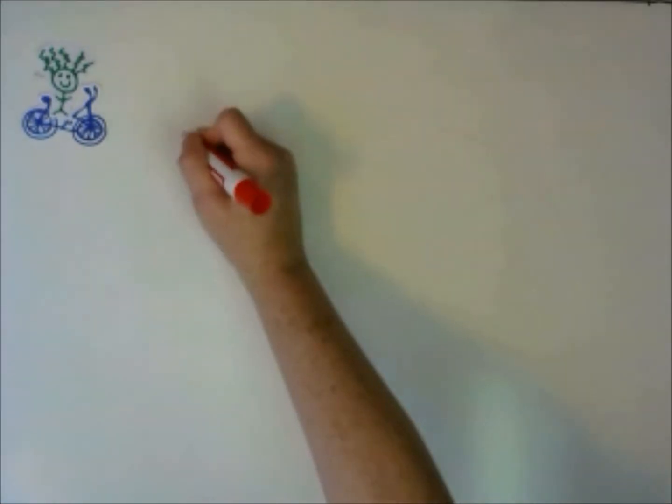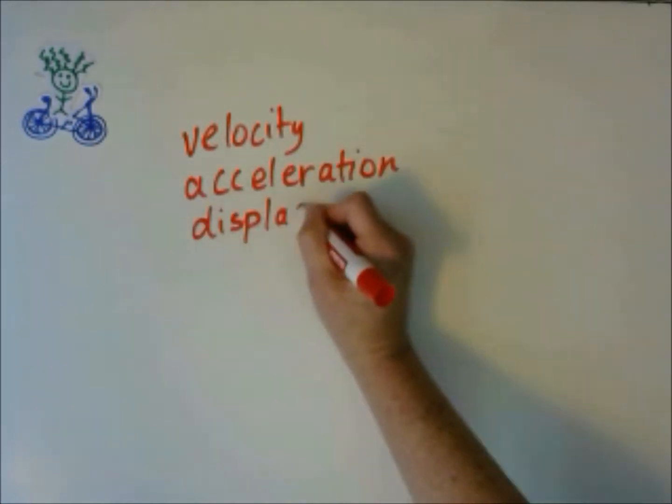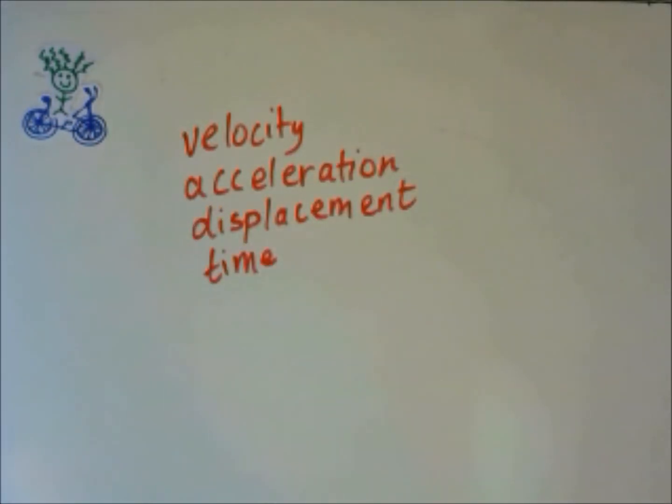We've talked about one-dimensional motion. Some of the terms we've used are velocity, acceleration, displacement, and time. All of these variables will affect the motion of an object.